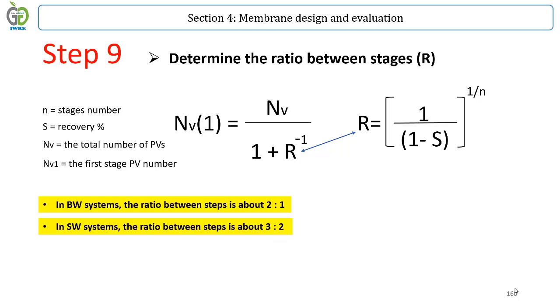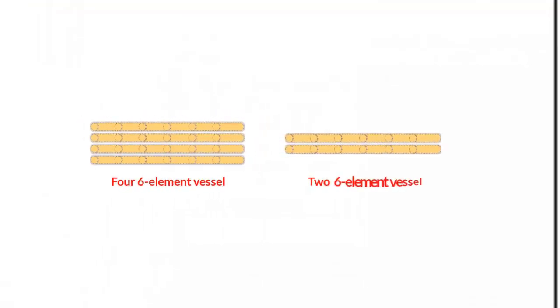Step 9: Determine the Ratio between Stages. The relation of the number of pressure vessels in subsequent stages is called the staging ratio, represented with R. For a system with 4 vessels in the first and 2 vessels in the second stage, the staging ratio is 2:1.